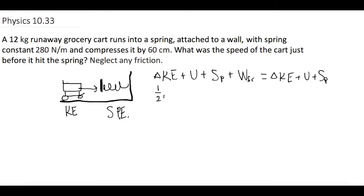Kinetic energy is one half MV squared initial plus Mg delta Y initial plus the spring potential energy, which is one half spring constant K times how far it compresses squared initial plus work due to friction equals one half MV final squared.